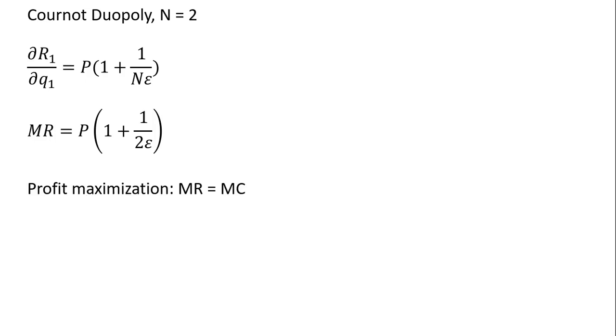Profit maximization occurs where MR equals MC: MC = P(1 + 1/(2ε)). We could write this as a markup pricing rule: P = MC/(1 + 1/(2ε)). We're marking up marginal costs as a function of the price elasticity of demand.